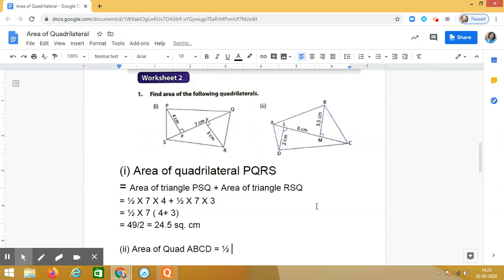Just give me the answer. Yes, half into... Yes, area of triangle ABC, what is that? Half into AC into BM, that is half into 6 into 3.5, plus half into...